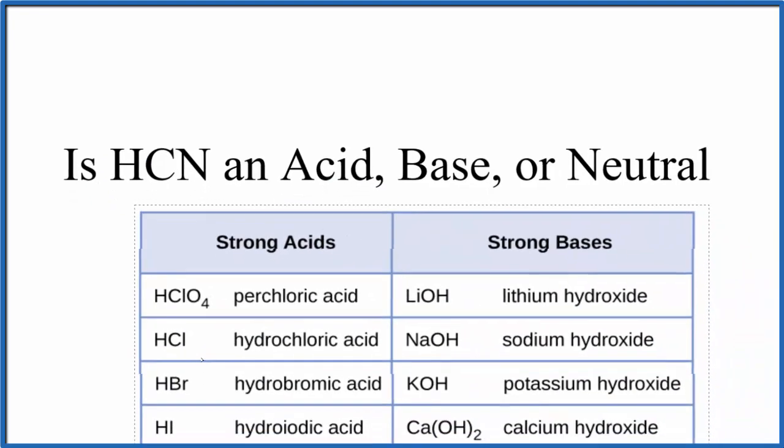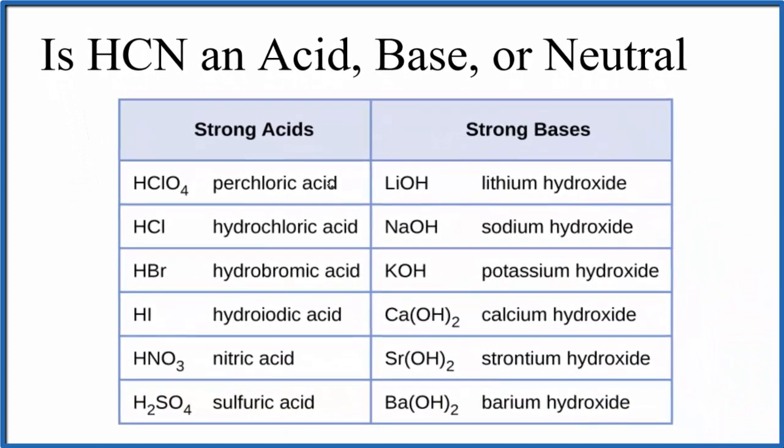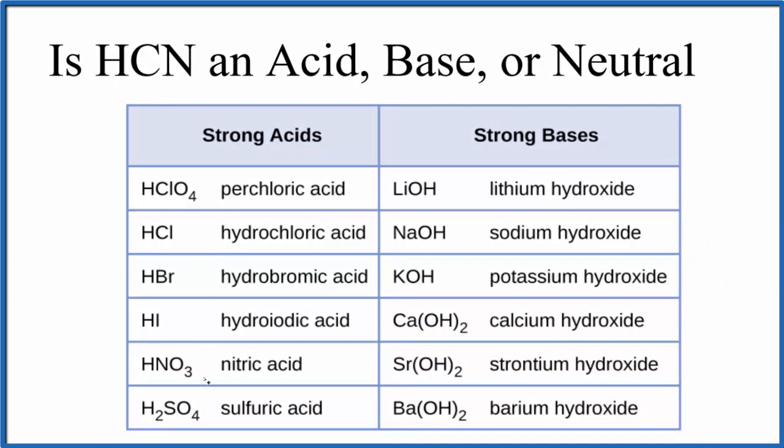If you memorize this table here, it's a list of the common strong acids and bases. We look down and we don't see HCN on our list. But because we have this H in front, we're pretty sure it's an acid. But it's not a strong acid. That means we're going to classify this as a weak acid.